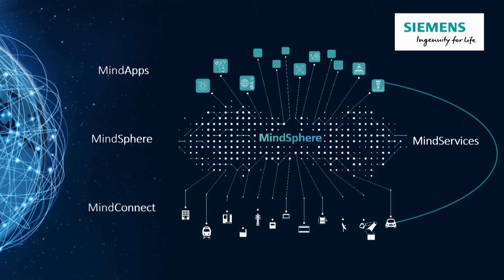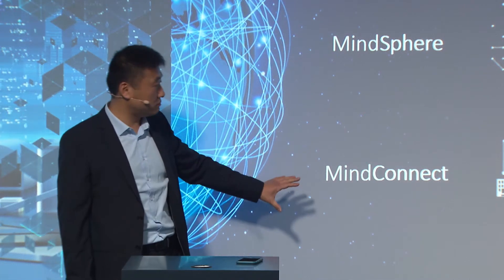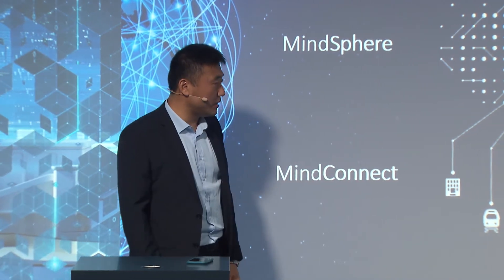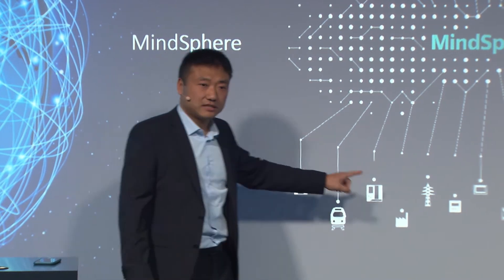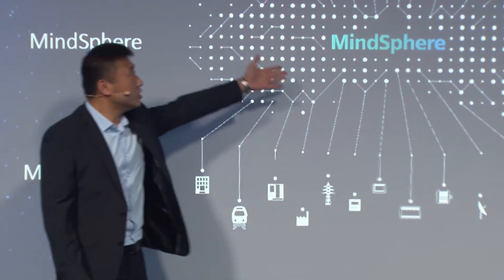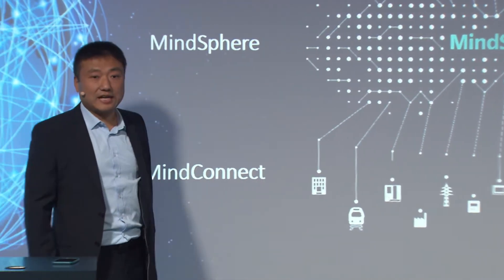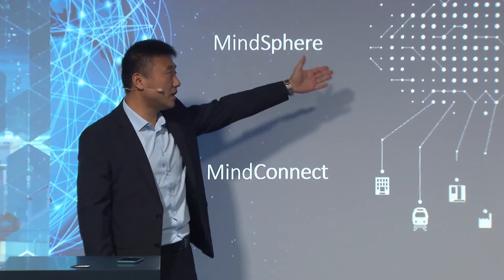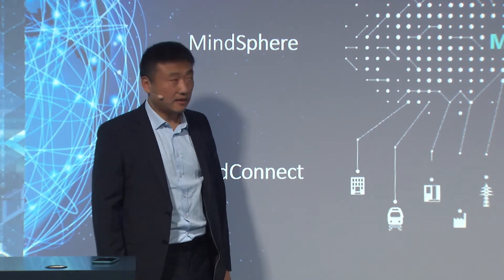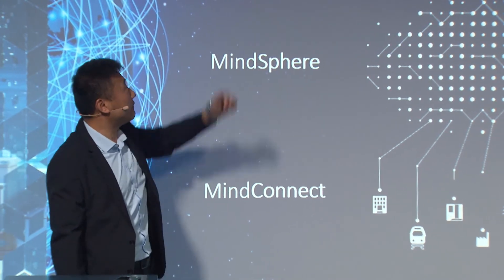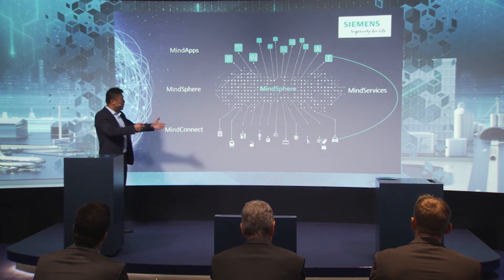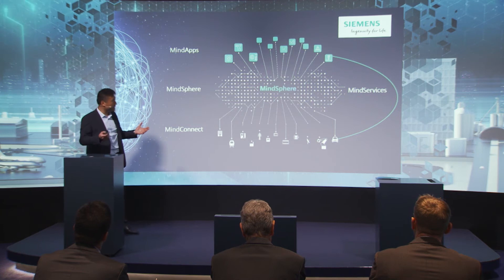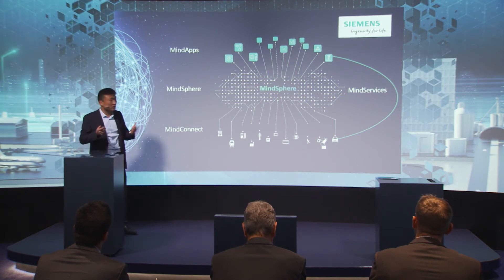We have the MindSphere Connect layer — sometimes we call it the fieldbus bond because it's on the field. With the MindSphere Connect element, we connect our machines, we connect our assets, and collect data and upload it to the MindSphere Cloud in the middle. Here in the MindSphere Cloud, we host the data. And in the northbound, we have the MindSphere apps — the applications. Once you have the data within MindSphere, you can do something meaningful with it and extract business value from your data.